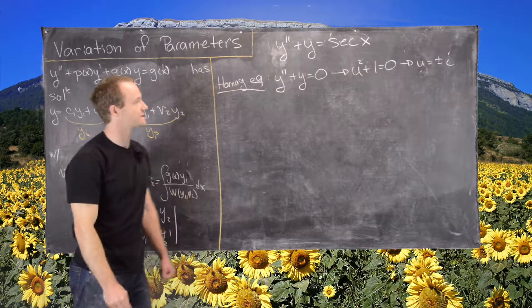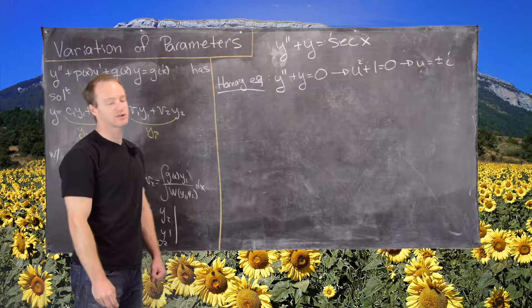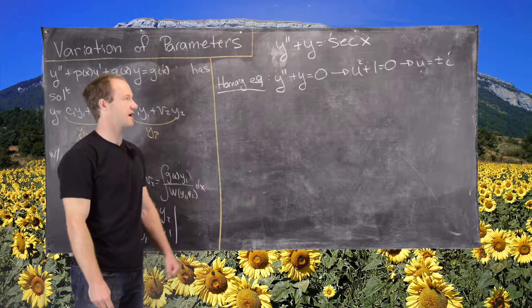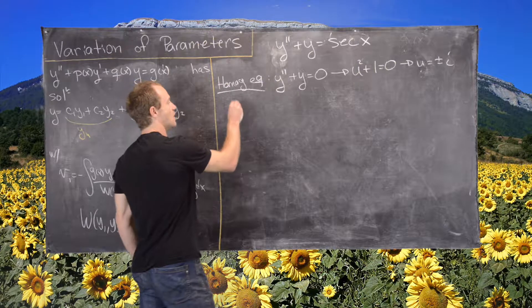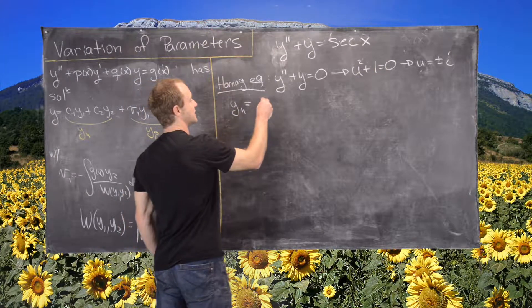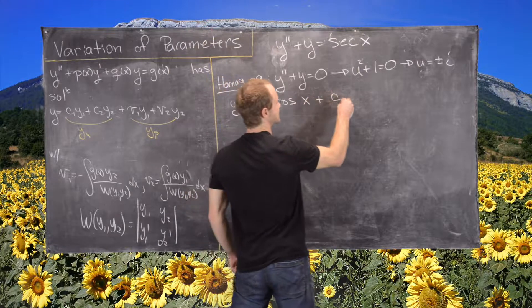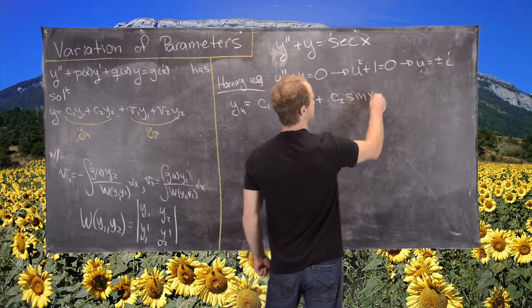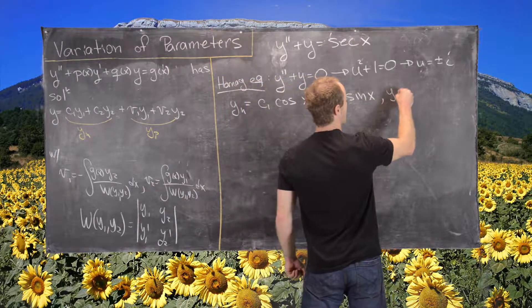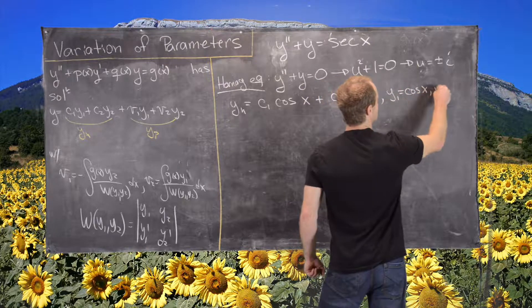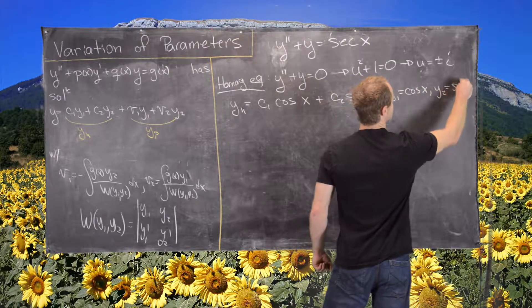And then by the theory for solutions of homogeneous second order linear differential equations, we know that yh will be given by c1 cosine of x plus c2 sine of x. So that means we'll set y1 equal to cosine of x and we'll set y2 equal to sine of x.